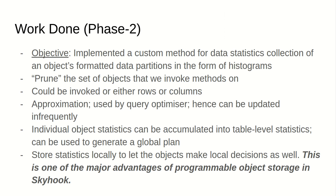One of the most powerful features of Skyhook is to let the objects make local decisions. To enhance this power, I implemented a statistics collection tool in the form of a histogram. Individual objects compute statistics on a local level, which is further accumulated into a table-level statistics to help generate a global query execution plan. This also allows the objects to locally perform access path selection by deciding whether to use indexing or table scans, and the sequence of operations to be performed based on the cardinality of the tuples involved.